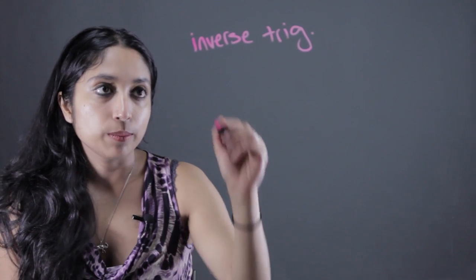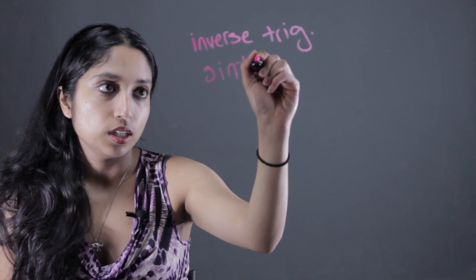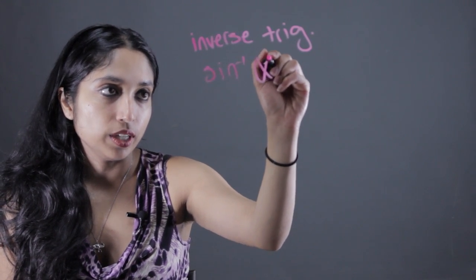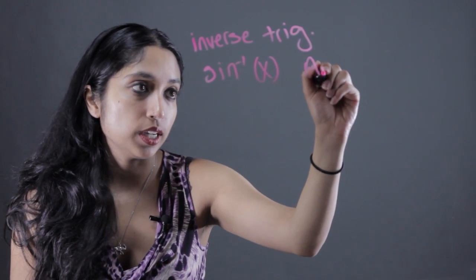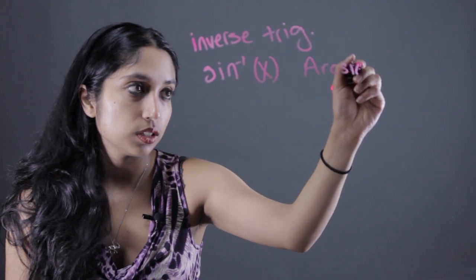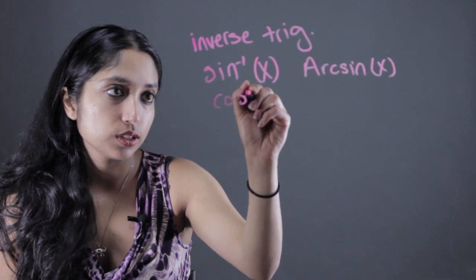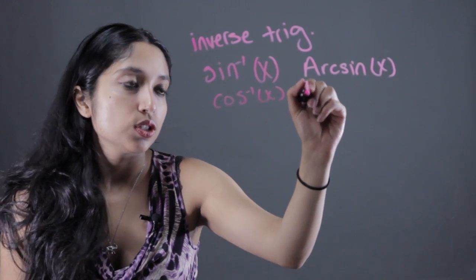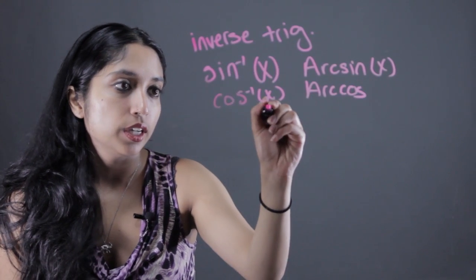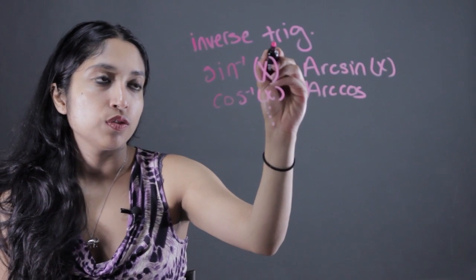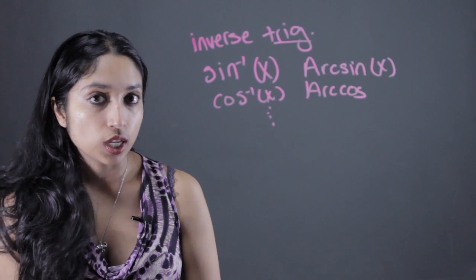A couple of examples of these would be sine inverse of something right here, which can also be written as arc sine, or cosine inverse, which can also be written as arc cosine, and so on and so forth for all the trigonometric functions that you usually use.